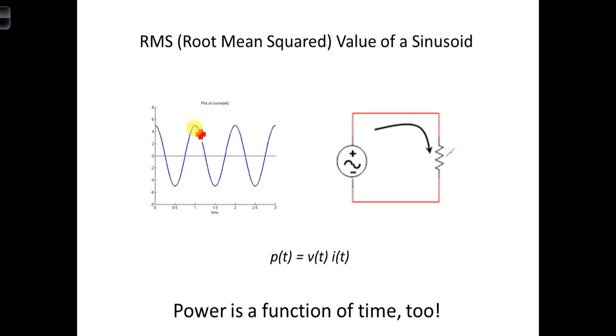That means at some points when the voltage and current are at maximum values, you're going to be delivering a lot of power to the load, and at times when the voltage or the current is zero, at that instant, you won't be delivering any power to the load.